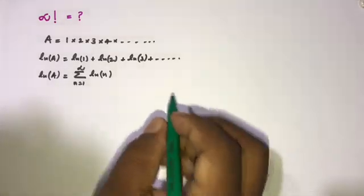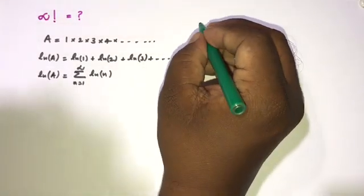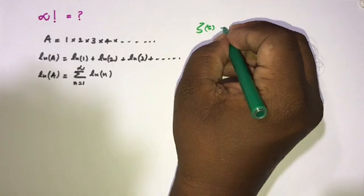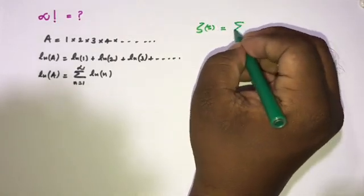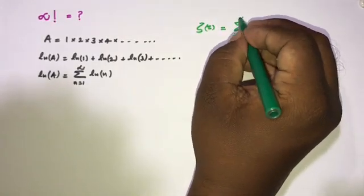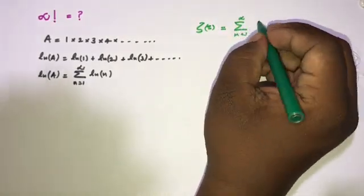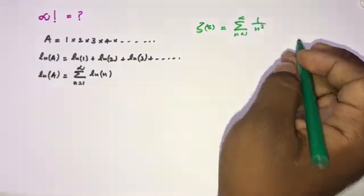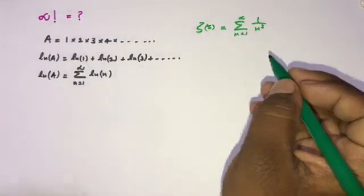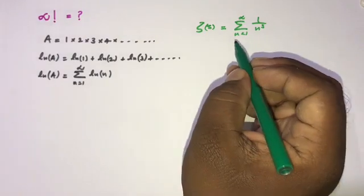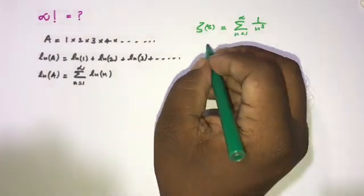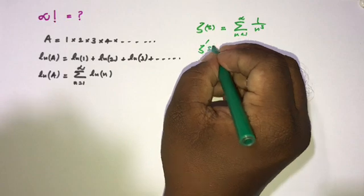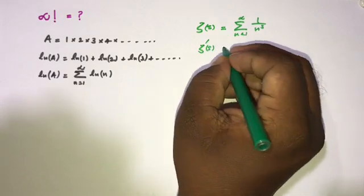Now we know the definition of the Riemann zeta function: zeta of s is equal to the infinite sum from 1 to infinity of 1 over n raised to the s power. Now differentiate with respect to s, so we can write zeta dash of s.